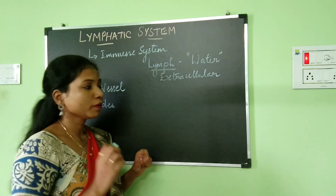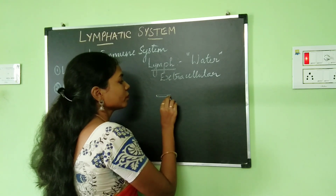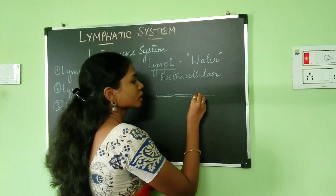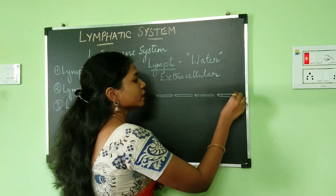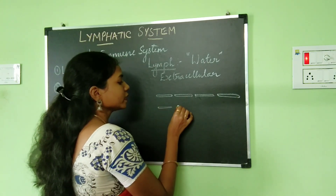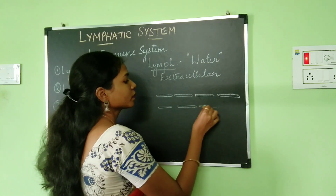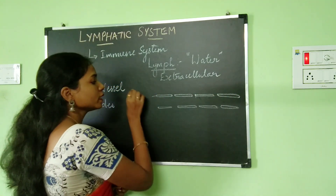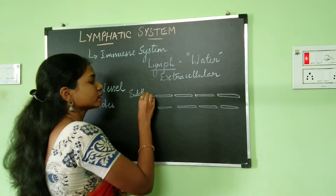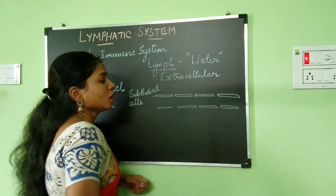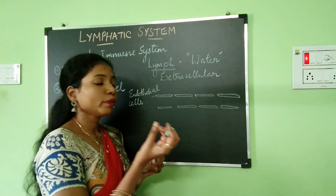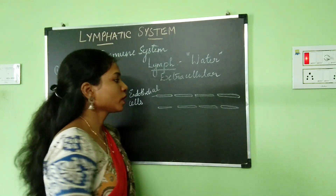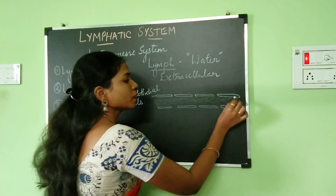Now let's see how lymph is going to be formed. We have already discussed about blood capillaries. The blood capillaries are made up of a single layer of endothelial cells. Just consider that this is one capillary and it is made up of a single layer of endothelial cells. If you see the walls of the capillaries, the walls are actually porous — meaning you can see the holes which are present in between the endothelial cells.